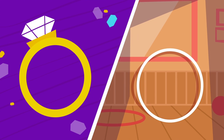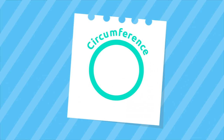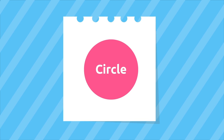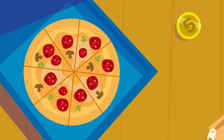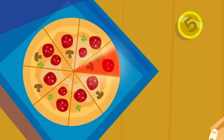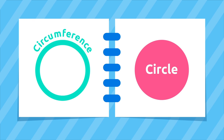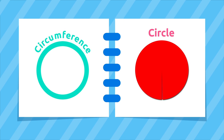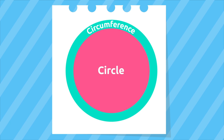Look around you — do you see any circumferences? That's right, this ring or this hoop. The circle is a plane figure whose boundaries are a circumference. Do you see any circles? That's right, this coin or this pizza. The difference between a circumference and a circle is that the circumference is the line around the circle, and the circle is everything the circumference contains.